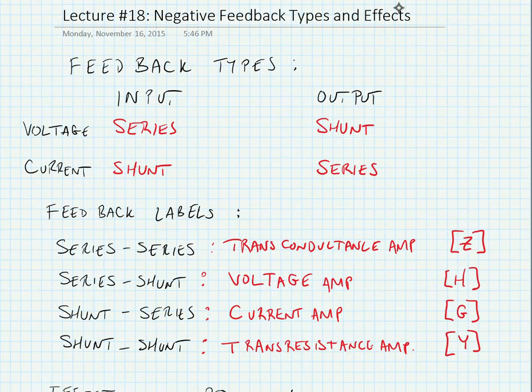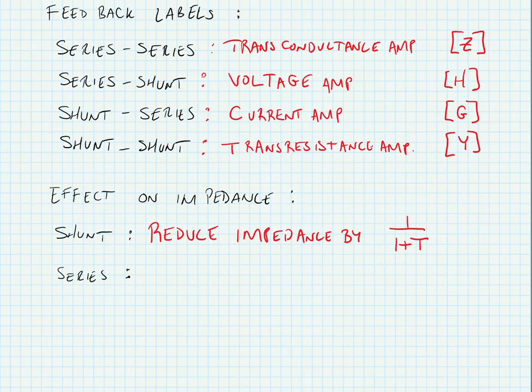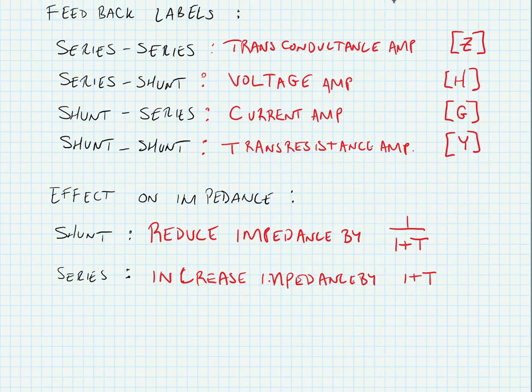One interesting property of feedback is that it has an impact on impedance and also on the bandwidth of a system. When we have a shunt type of feedback, it reduces the impedance by a factor of one plus the loop gain. Remember, our loop gain is defined by a quantity T, which equals A times beta — the forward gain times the reverse gain. A series connection increases the impedance by a factor of one plus the loop gain. Feedback always increases bandwidth by a factor of one plus the loop gain.